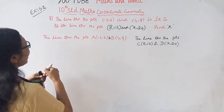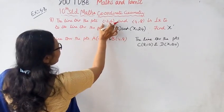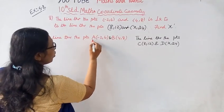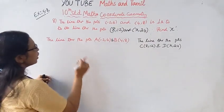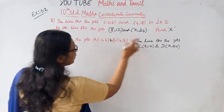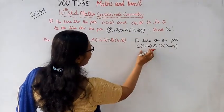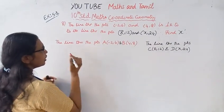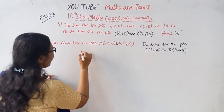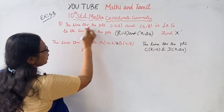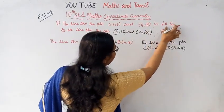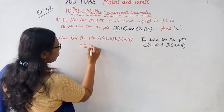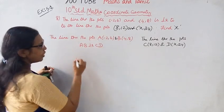Let's note it down here. The line through the points (-2, 6) and (4, 8), we'll call it A and B. The line through the points (8, 12) and (x, 24), we'll call it C and D. The line AB is perpendicular to CD.